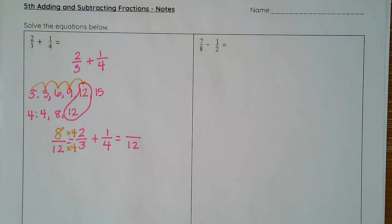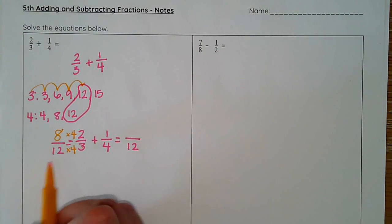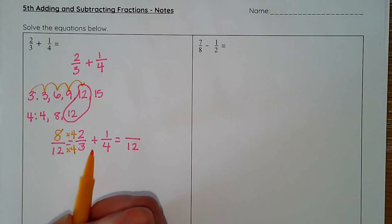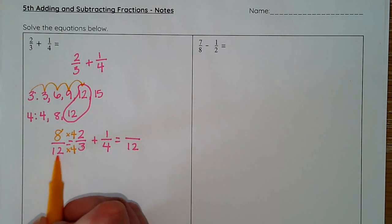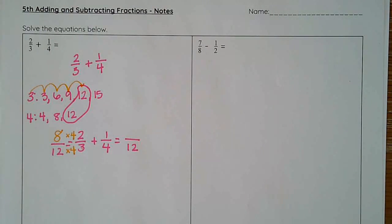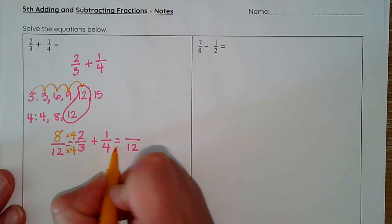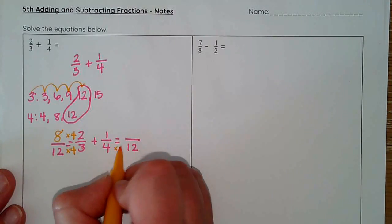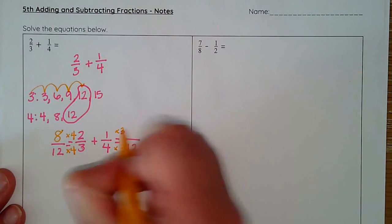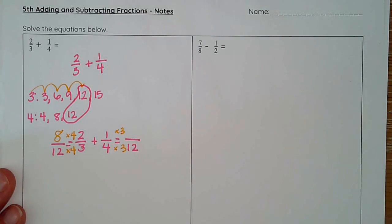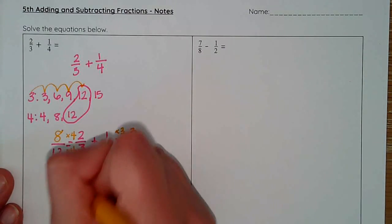So eight-twelfths is equivalent to two-thirds. However, my whole is just divided into more pieces. I do the same with my other fraction. Four times what equals twelve? Or I can count four times three equals twelve. So I need to multiply my numerator by that as well. One times three is three. So now I have two fractions that are equivalent, but we have the same denominator, the same number of pieces, so we can add them.